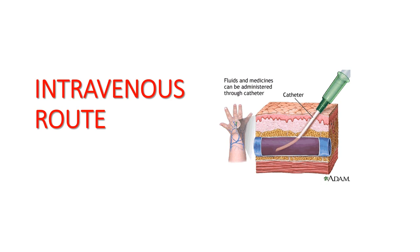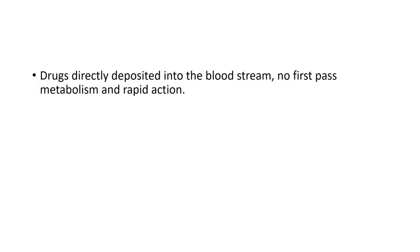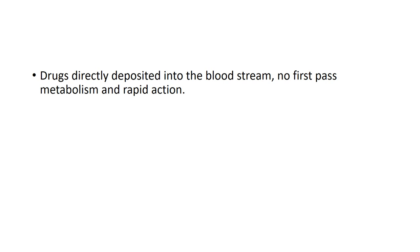Intravenous route: as seen in the picture, the tip of the needle enters the vein — direct entry of medicines into the vein, reaching the systemic circulation. There is no first pass metabolism here and bioavailability is 100% — if you give 100 mg of drug, 100 mg reaches the systemic circulation. Drugs are directly deposited into the bloodstream, with no first pass metabolism and rapid action.